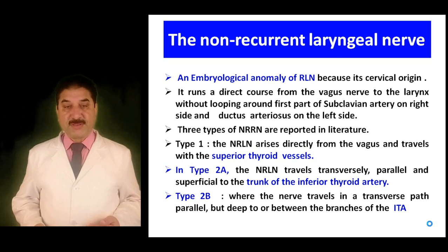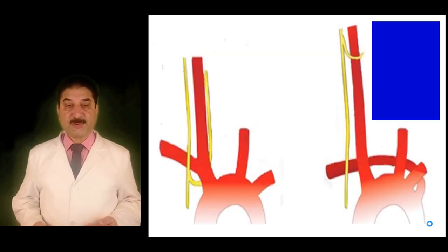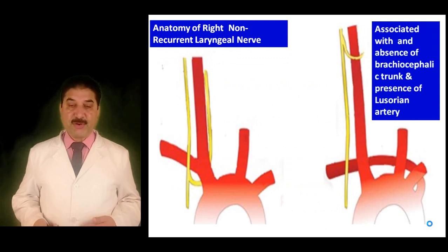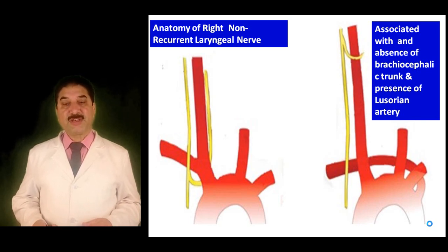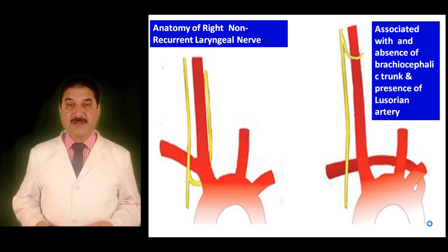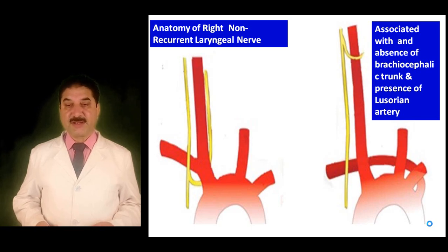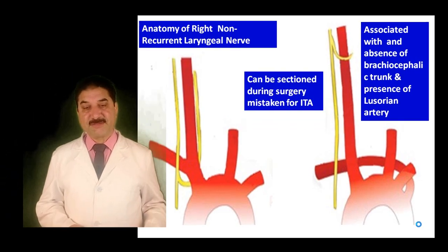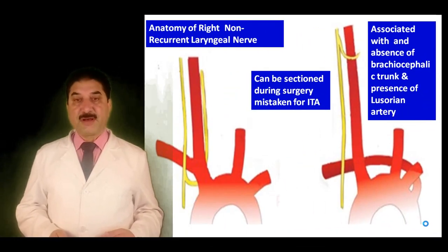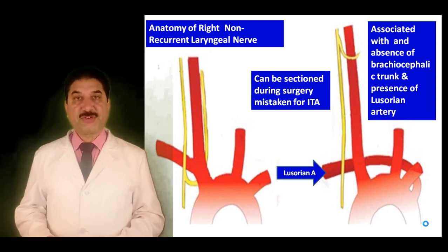As shown in this diagram, on the right side the recurrent laryngeal nerve hooks around the first part of the subclavian artery. In the case of a non-recurrent laryngeal nerve, the brachiocephalic trunk on the right side is missing. The right subclavian artery arises from the arch of the aorta on the left side and passes posterior to the esophagus. In 5% of cases this leads to compression of the esophagus and dysphagia. Here, the non-recurrent laryngeal nerve originates in the neck and can be inadvertently sectioned during surgery, being mistaken for the inferior thyroid artery. In this case the artery arises from the arch of the aorta and passes posterior to the esophagus.